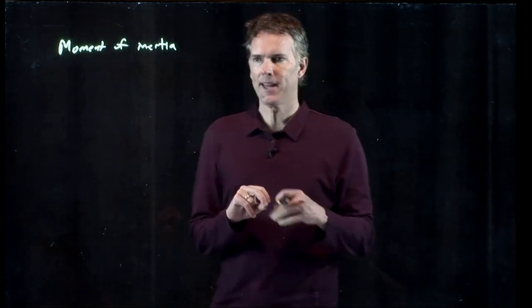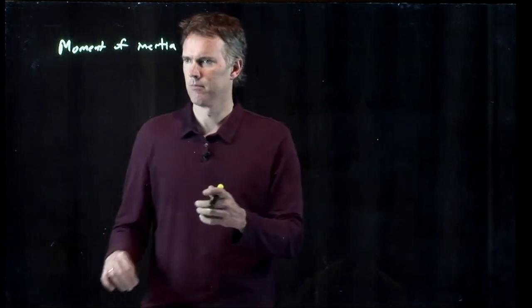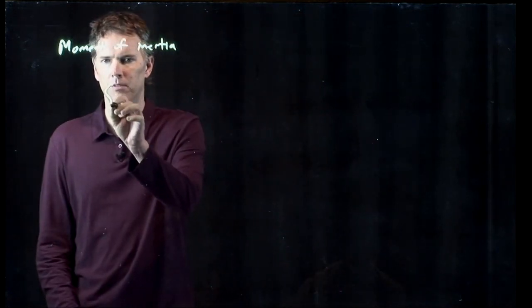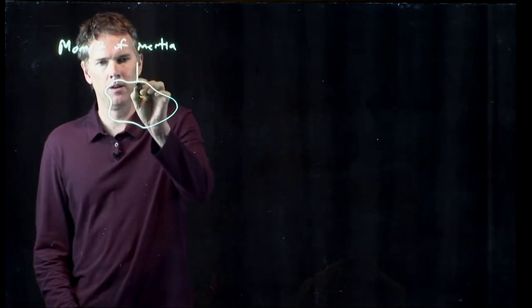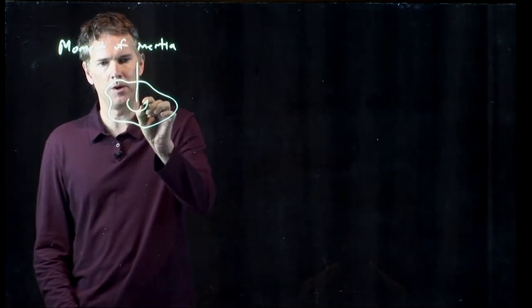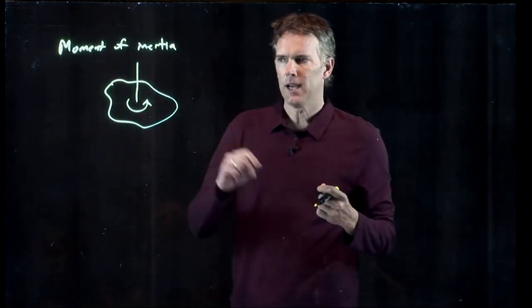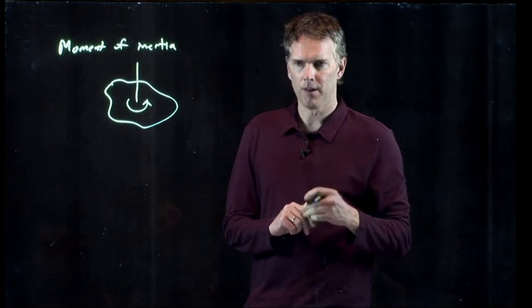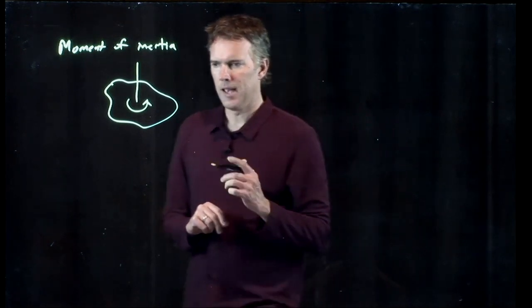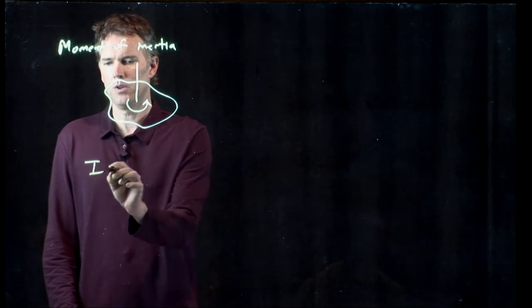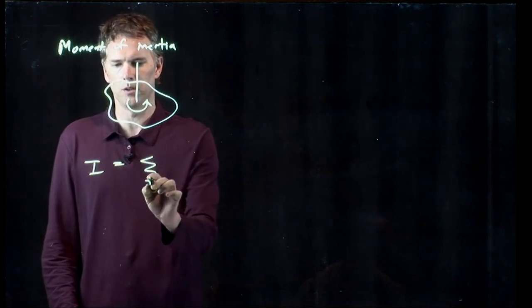But oftentimes, we don't have a nice set of particles. We have some complicated blob. Right? Here's our blob, and we're going to spin it about some axis like that. How would you calculate the moment of inertia of something like that? And the way you do it is you turn your summation into an integral.